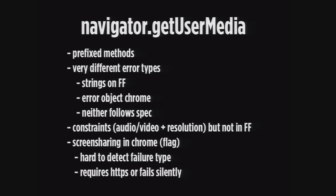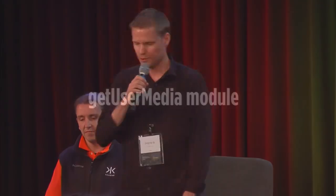The methods are still prefixed, which is to be expected. They throw very different error types — in Firefox the error handler gives you a string back; in Chrome it gives you an error object as it's supposed to, but neither quite follows the spec as far as telling you what went wrong. Specifying constraints like wanting a smaller video is available with limited support in Chrome and not at all in Firefox. Screen sharing, which is really important for replacing something like Skype or Google Hangouts, is available in Chrome but it's behind a flag. Very hard to detect error types. Requires HTTPS — if you don't have your own self-signed cert it will just fail silently and you won't know why.